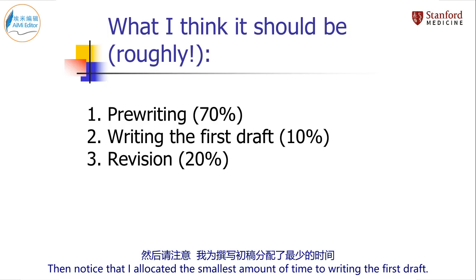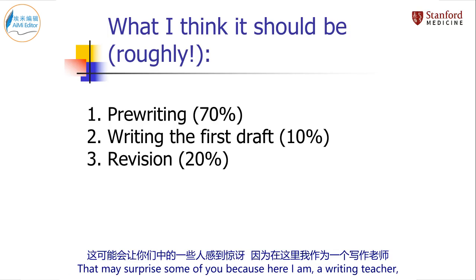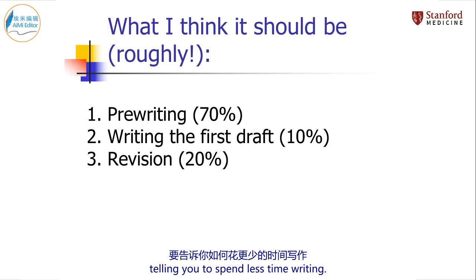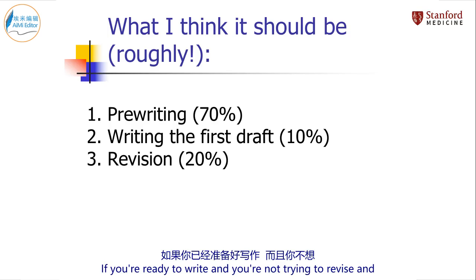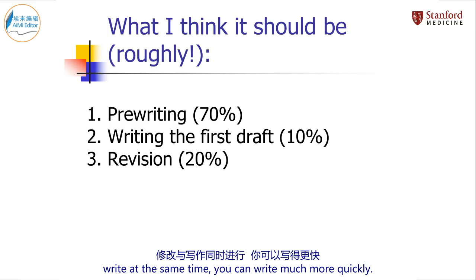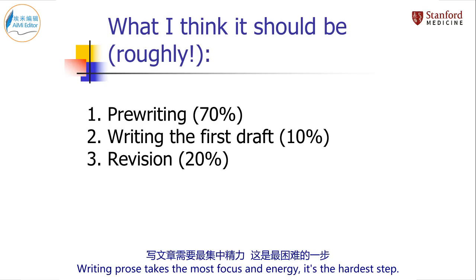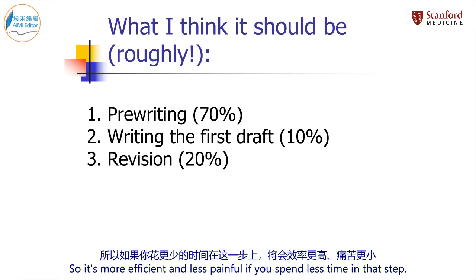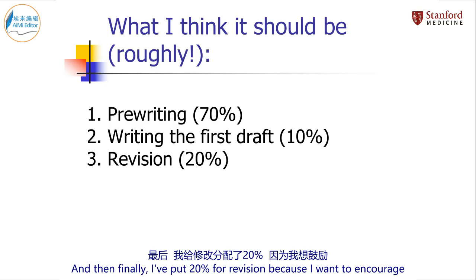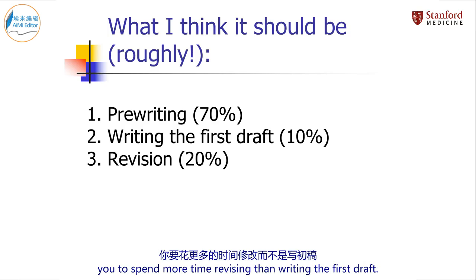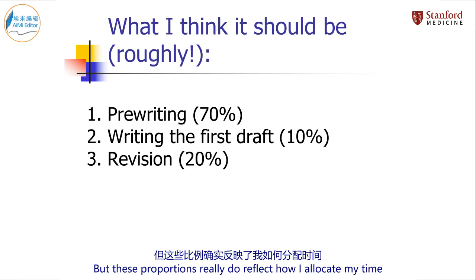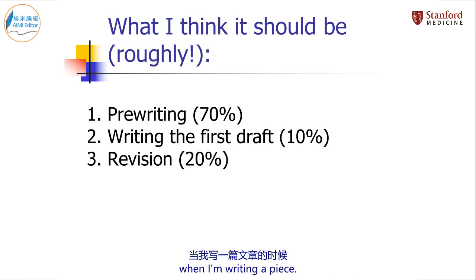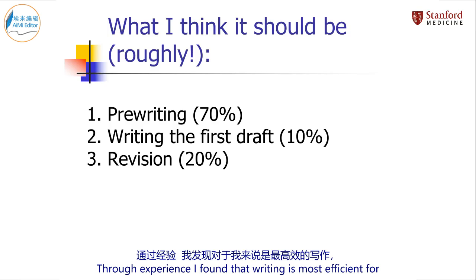Notice that I allocated the smallest amount of time to writing the first draft. That may surprise some of you because here I am, a writing teacher, telling you to spend less time writing. But what I'm trying to get you to do is write in a way that is more efficient. If you're ready to write and you're not trying to revise and write at the same time, you can write much more quickly. Writing prose takes the most focus and energy — it's the hardest step, so it's more efficient and less painful if you spend less time in that step. I've put 20% for revision because I want to encourage you to spend more time revising than writing the first draft. Revision is where elegance happens in writing. These proportions really do reflect how I allocate my time when I'm writing a piece.